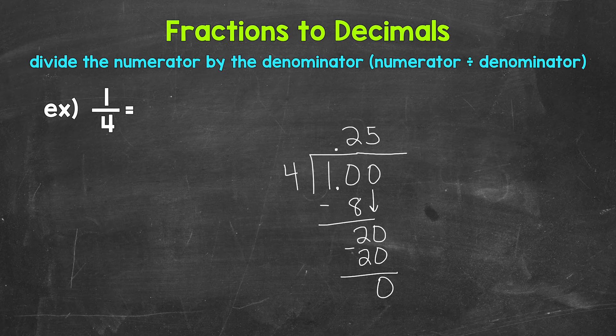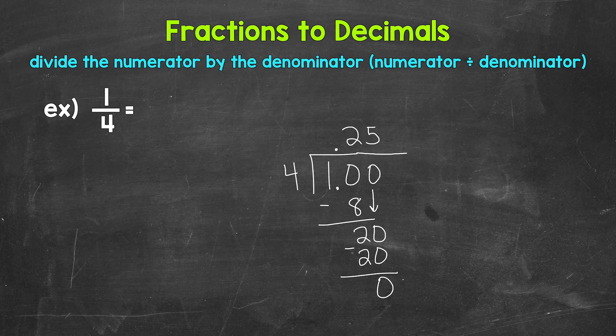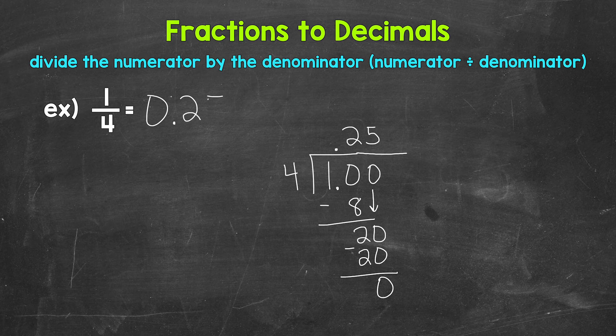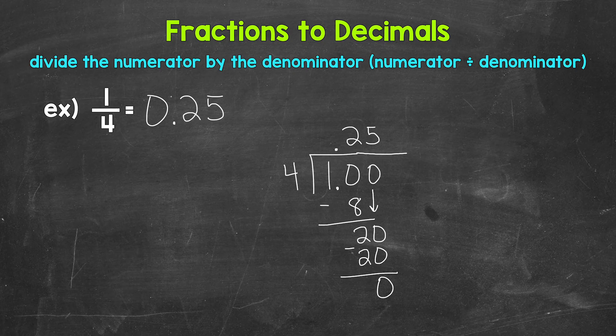And nothing else to bring down within our problem. So we are done. 1/4 equals 25 hundredths. So let's write this up here. 1/4 equals 0.25. Again, 1/4 equals 25 hundredths. So there you have it. There's how to convert 1/4 to a decimal.